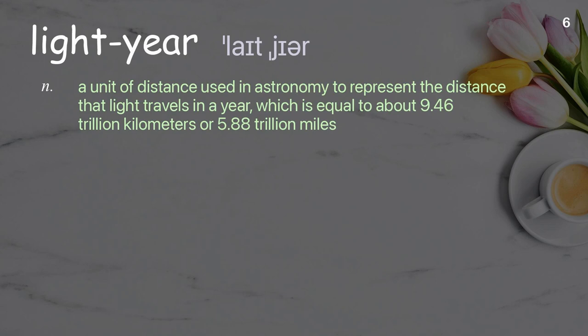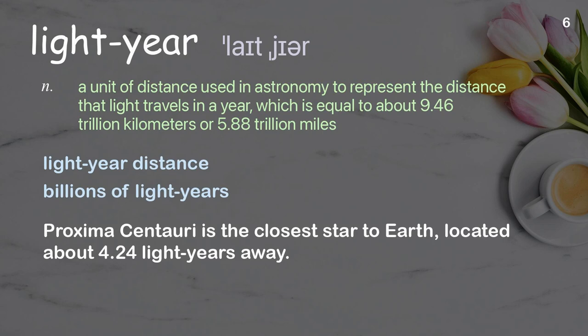Light year: a unit of distance used in astronomy to represent the distance that light travels in a year, which is equal to about 9.46 trillion kilometers or 5.88 trillion miles. Examples: light year distance, billions of light years. Proxima Centauri is the closest star to earth, located about 4.24 light years away.